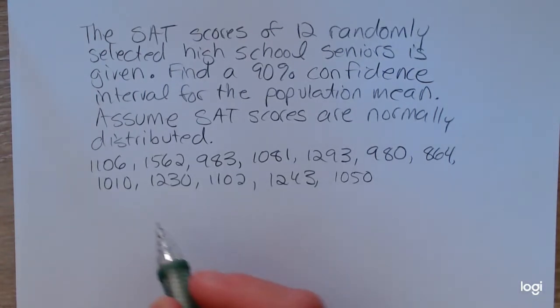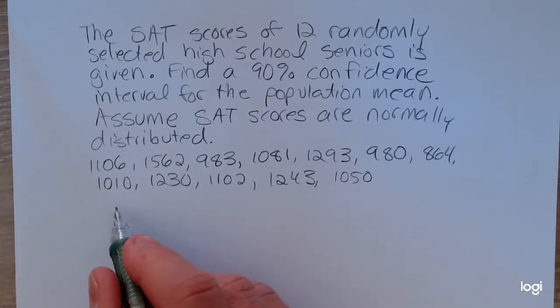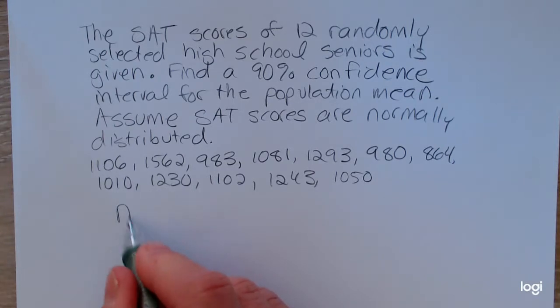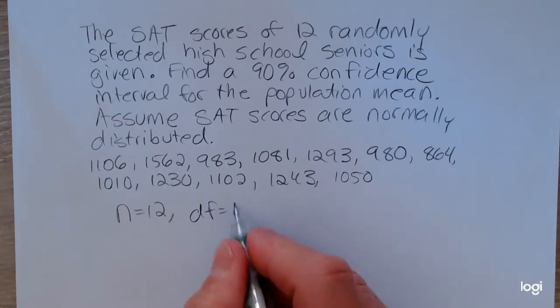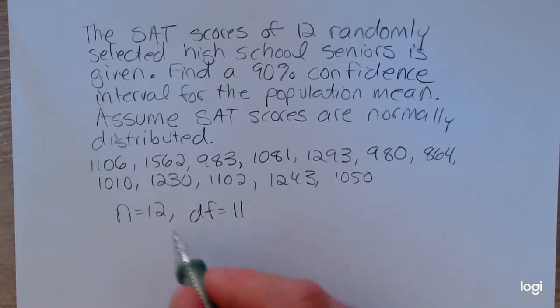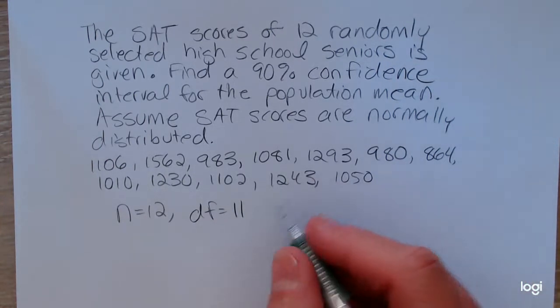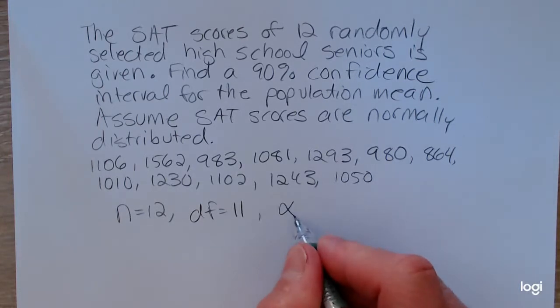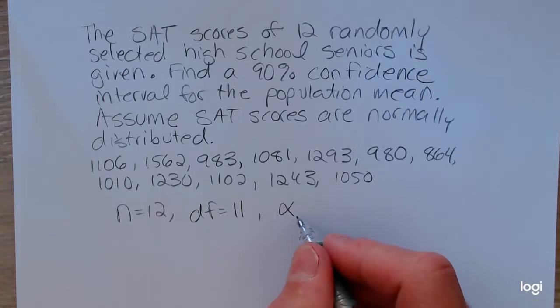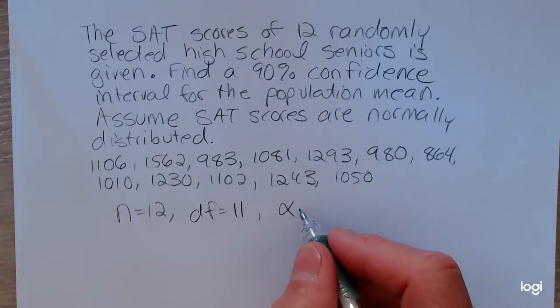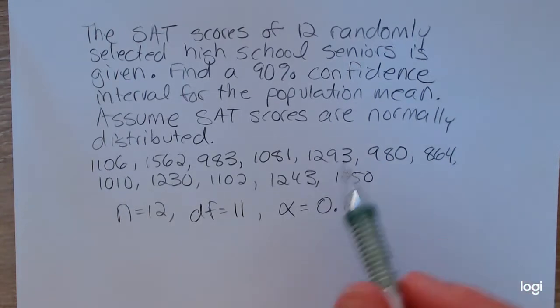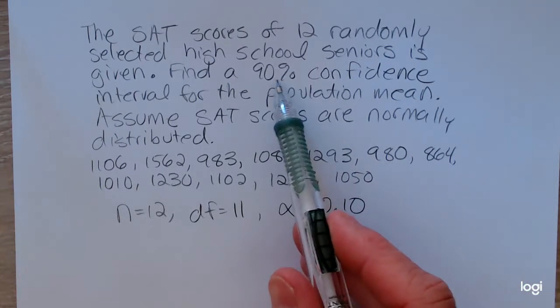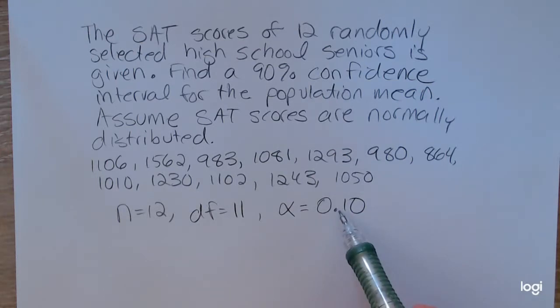So the pieces we need will be the sample size. Okay, we have that. So the degrees of freedom will be 11 because the degrees of freedom is the sample size minus 1. We'll need alpha, specifically alpha over 2. But alpha right now for us is going to be 0.10 because our level of confidence is 0.9. Alpha is 0.10.